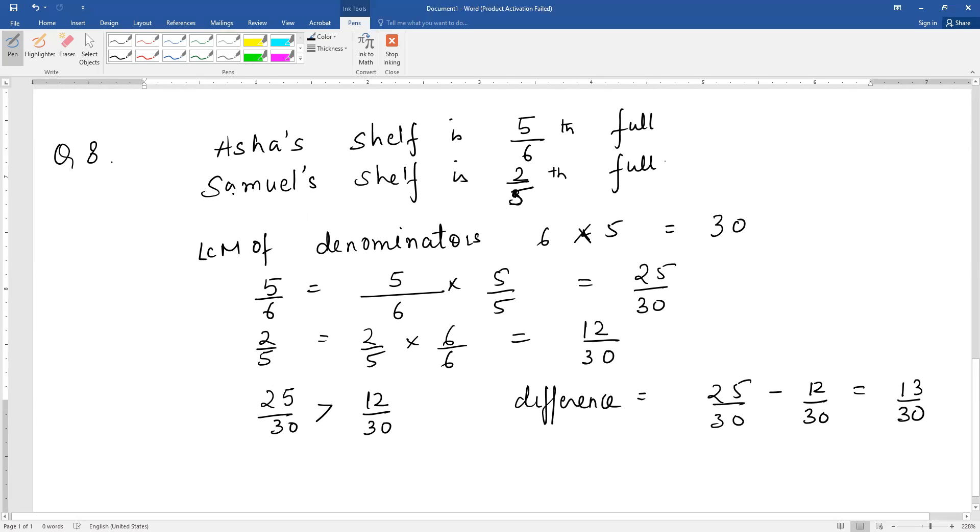25/30 minus 12/30 equals 13/30. So Asha's bookshelf is more full by 13/30.